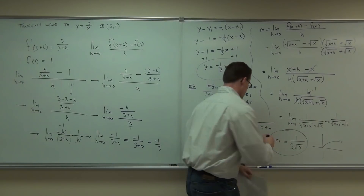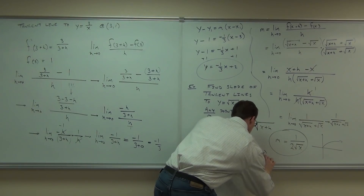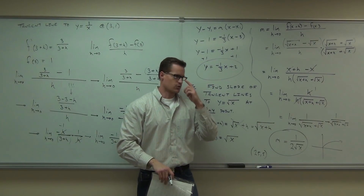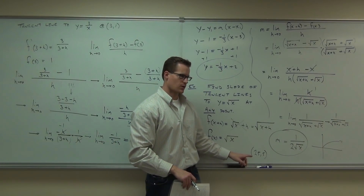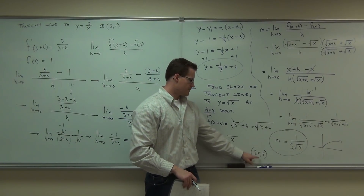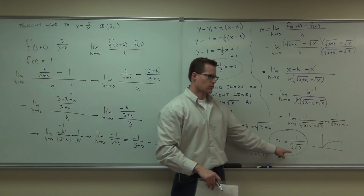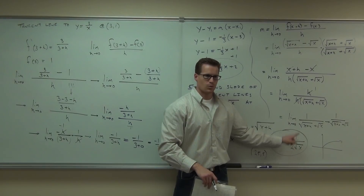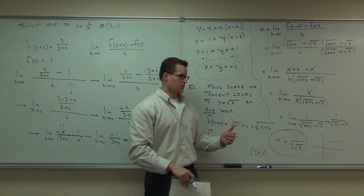The point (25, 5) is on that curve — square root of 25 is 5. So if I said find the slope of the curve at this point, which one would you plug in? Plug in 25. What's square root of 25 times 2? One tenth. Very easy. You just find the slope of this curve. It's one tenth.